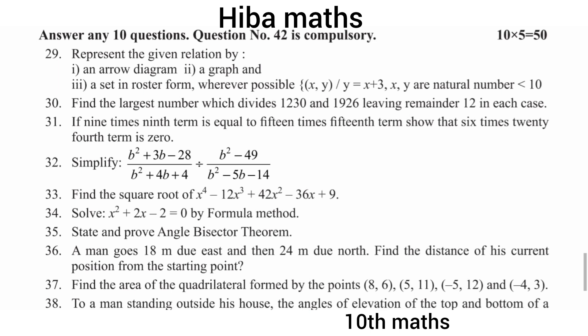Find the area of the quadrilateral formed with the coordinates: (8,6), (5,11), (-5,12), and (-4,3). The quadrilateral formula is very easy — substitute the formula, solve, and do the calculation.